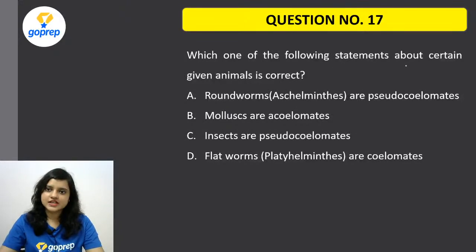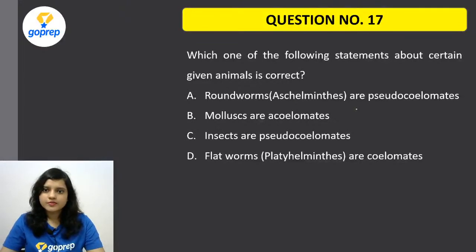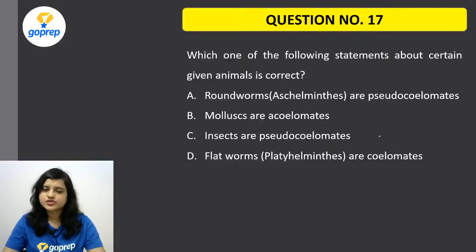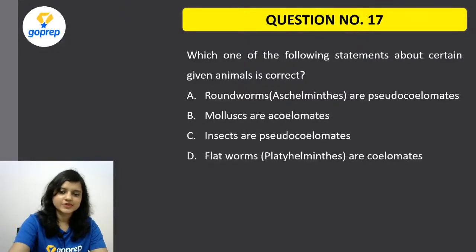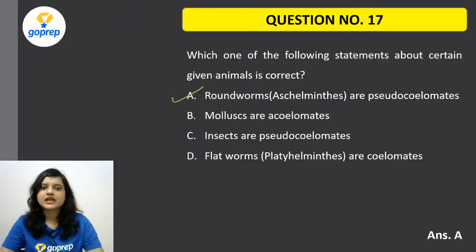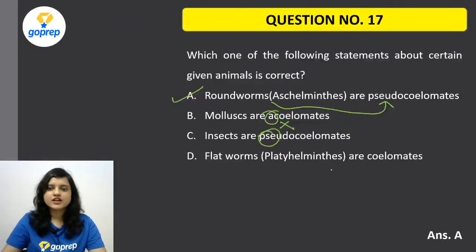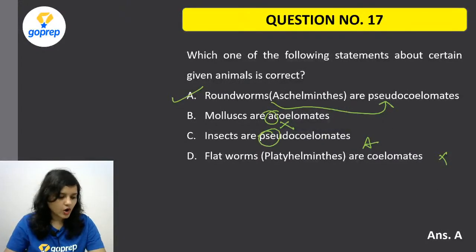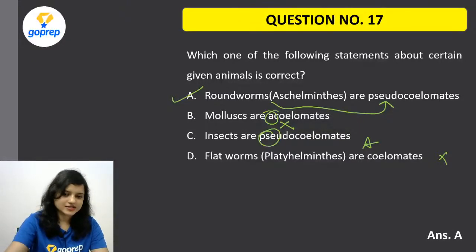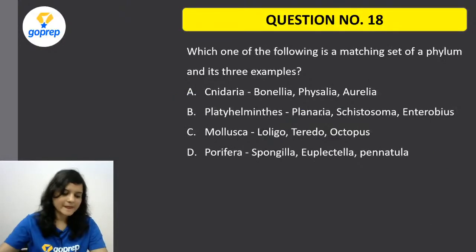Question number 17: Which of the following statements about certain animals is correct — Roundworms are pseudocoelomate, Mollusca are acoelomate, Insects are pseudocoelomate, or Flatworms are acoelomate? This was a simple question. The correct option is A — Roundworms are pseudocoelomate. Mollusca are actually pseudocoelomate. Insects are also pseudocoelomate. Flatworms are acoelomate. That is why all the other statements are wrong and option A is correct.